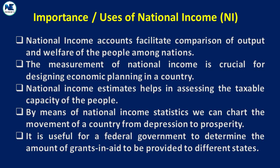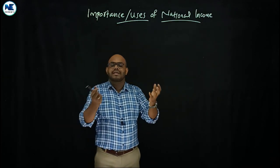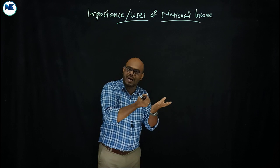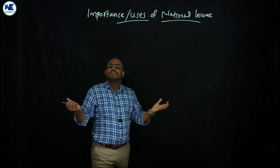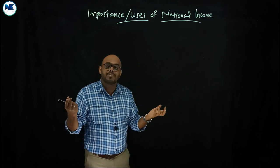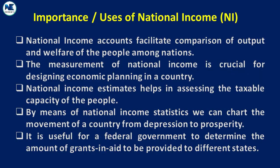Sixth point: national income accounts facilitate comparison of output and welfare of the people among nations. For example, the USA is the richest country with the highest GDP, and India is the fifth largest economy in the world. We can measure and compare output, standard of living, and welfare. Seventh point: the measurement of national income is crucial for designing economic planning in a country, such as five-year plans.